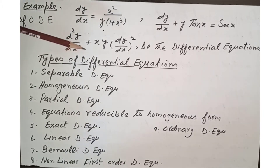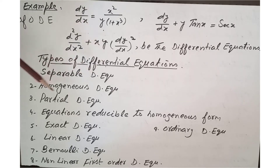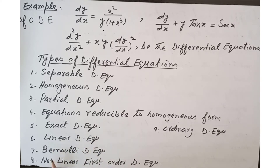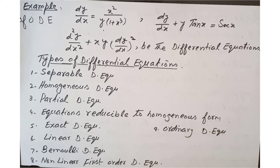There are many types of differential equations. Number one: separable differential equations. Number two: homogeneous differential equations. Number three: partial differential equations. Number four: equations reducible to homogeneous form. Number five: exact differential equations. Number six: linear differential equations. Number seven: Bernoulli differential equations. Number eight: nonlinear first order differential equations. Number nine: ordinary differential equations.